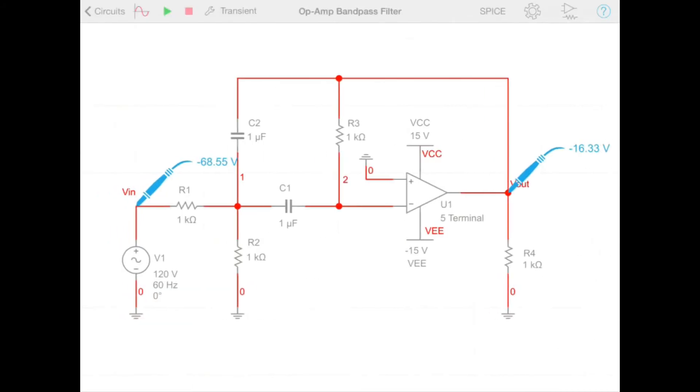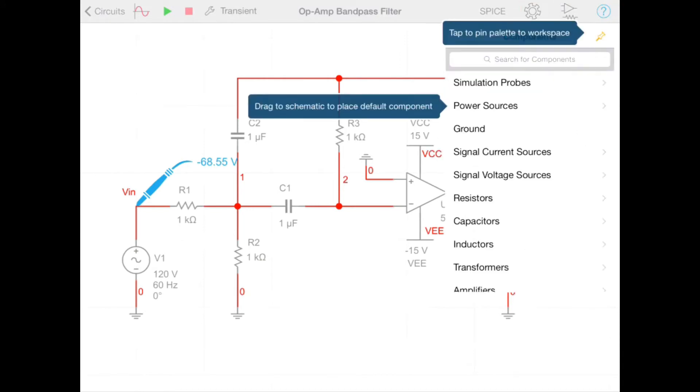If we tap the properties button, we can change the properties associated with our schematic, and then tapping the component button gives us access to all the components within MultiSim Touch, which we can then use on our schematic.